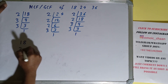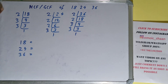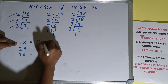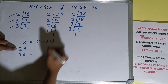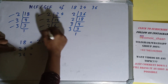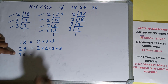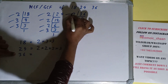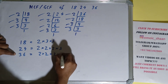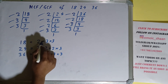The next step is to write down each number with its prime factors. For 18, the prime factors are 2 × 3 × 3. For 24, the prime factors are 2 × 2 × 2 × 3. For 36, the prime factors are 2 × 2 × 3 × 3. Now we need to circle out the common prime factors.